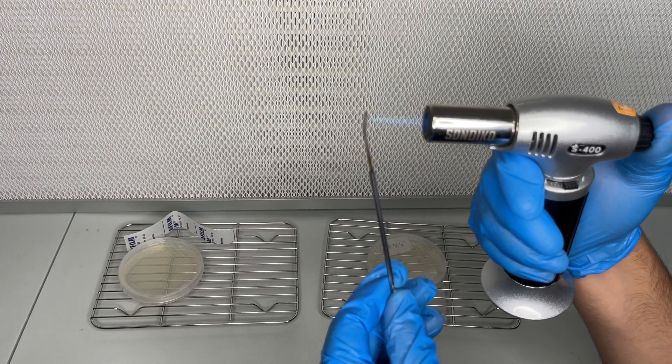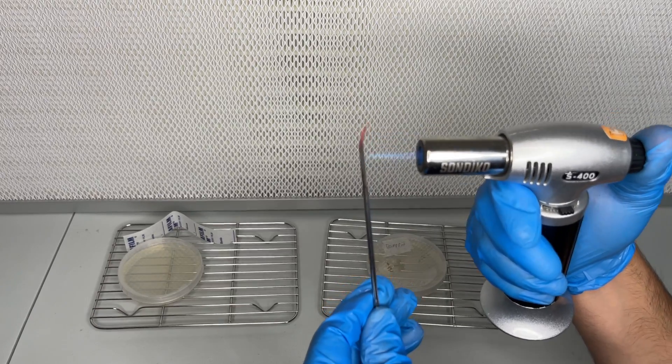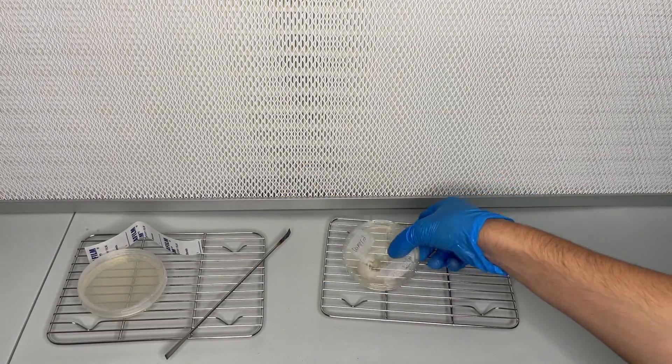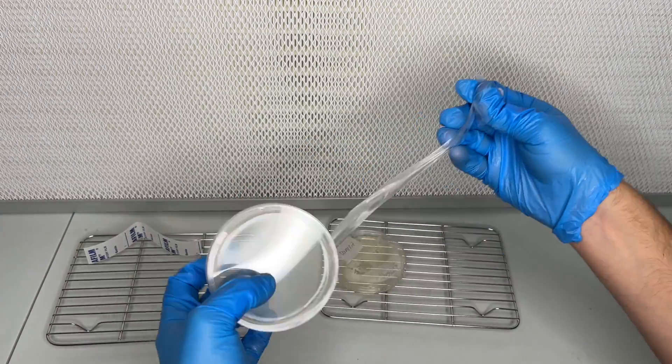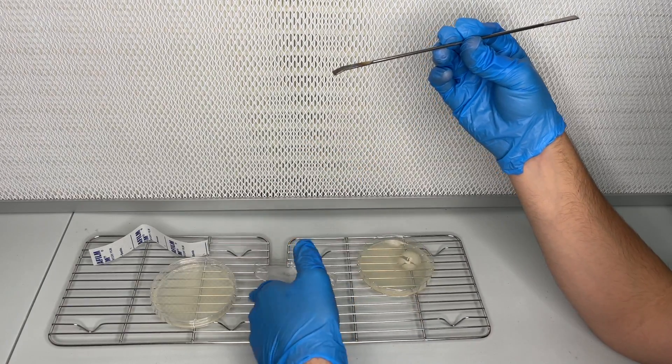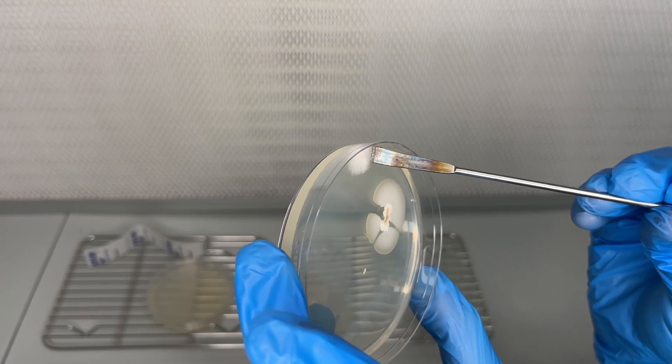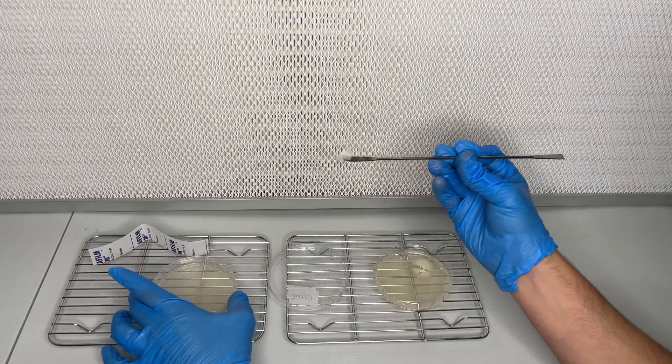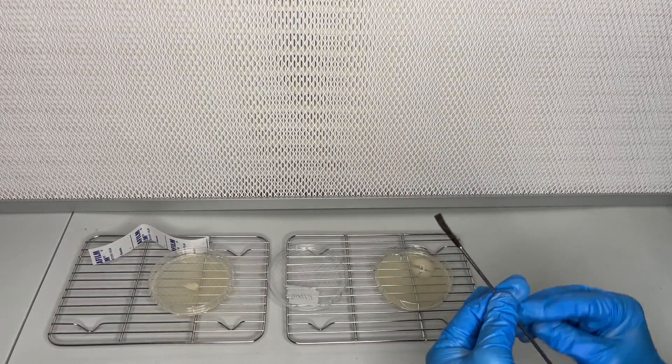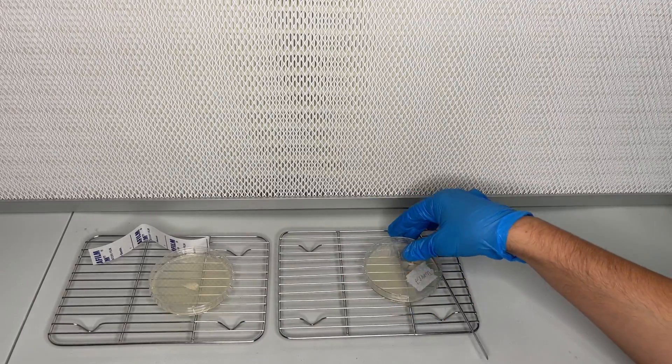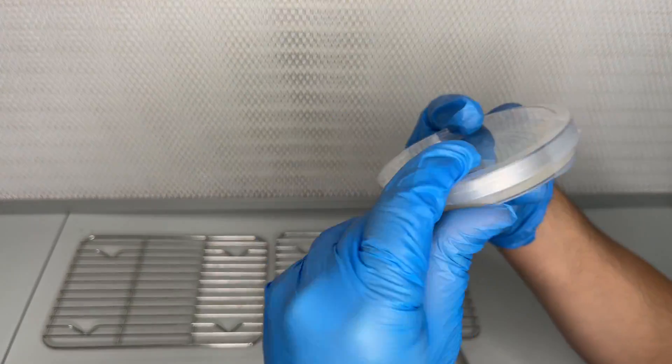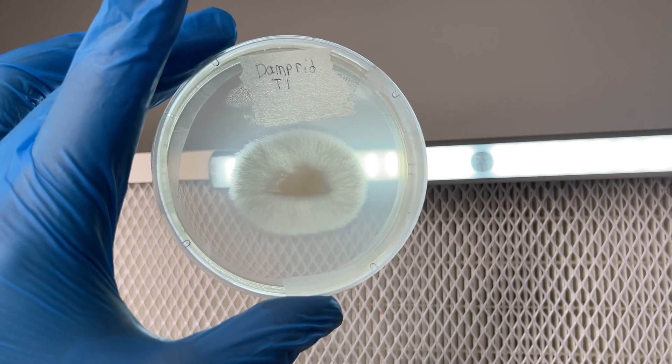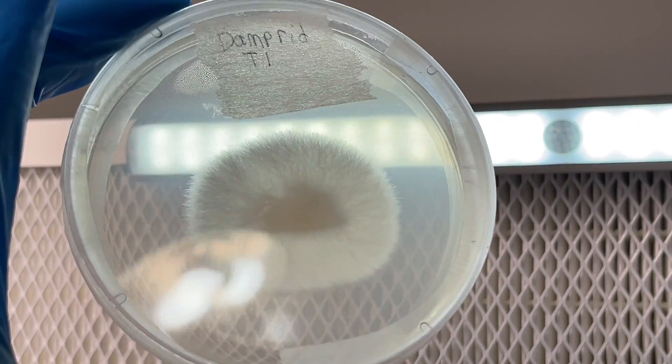I flame sterilized a metal tool and transferred the piece of mycelium to a new agar plate. After transferring the piece of mycelium to a new agar plate I wrapped it in parafilm and allowed it to incubate at 75 degrees Fahrenheit for two weeks. I was happy to see that I was successful in transferring the clean mycelium to the new agar plate.